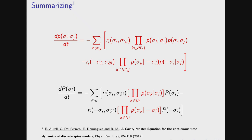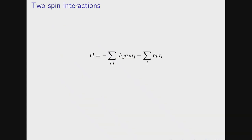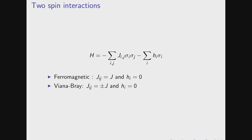Now we have this kind of closure — let's see how it works. The simplest possible model has two-spin interaction: a physical model where we want to understand the kinetic Monte Carlo dynamics for this Hamiltonian. We run a Monte Carlo simulation of the dynamics and compare how our equation describes it. We first try with a ferromagnet model and then move to a Viana-Bray model, which is more complex.